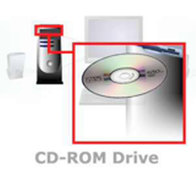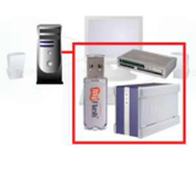A CD-ROM drive reads information from a standard compact disk, or CD, which can contain application software, data, or music. You may also come across other forms of storage device which can be attached to a PC, including external hard disk drives, zip drives, tapes, cartridges, DVD drives, and flash drives.